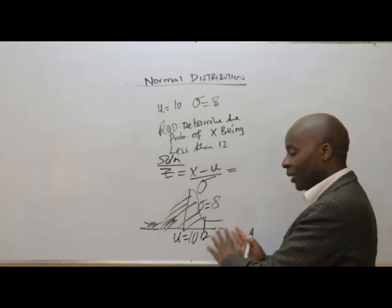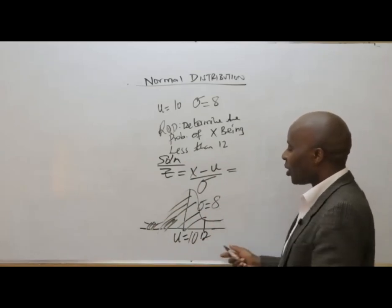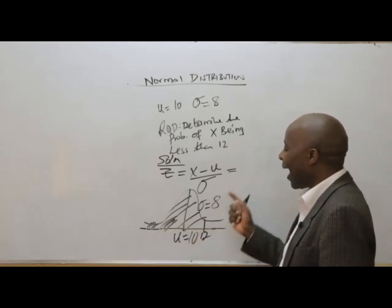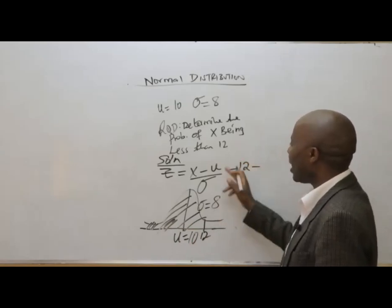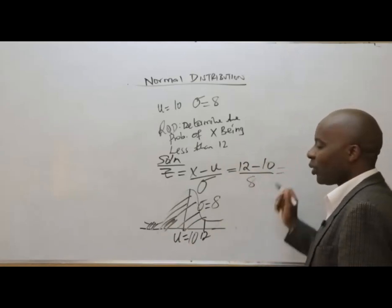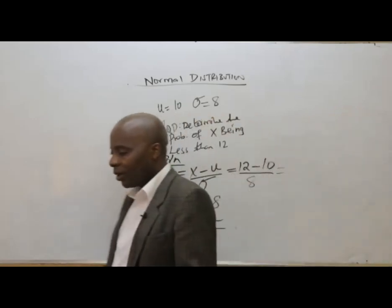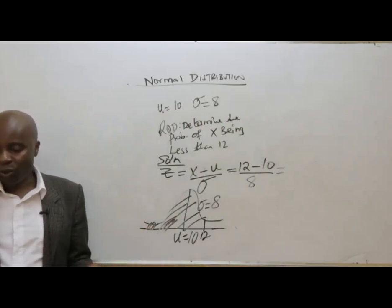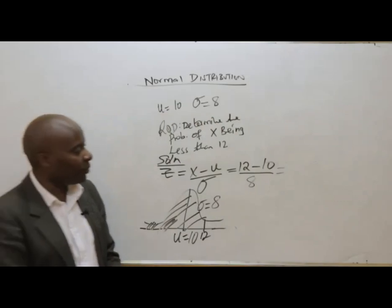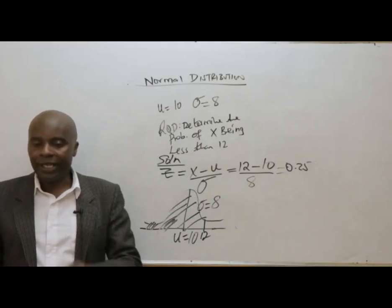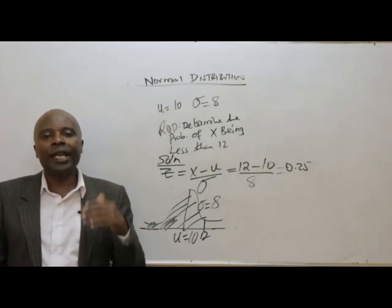After mastering this, go ahead and standardize. Our X value is 12, so Z equals 12 minus the mean, which is 10, all over the standard deviation which is 8. So 12 minus 10 is 2, divided by 8. Melissa gives a figure of 0.25 — thank you. So 0.25 is our Z-score.